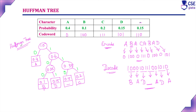This is the Huffman tree, and the values placed for the left and right subtrees are the Huffman codes. Using these codewords you can encode and decode the given text. This is all about the Huffman tree.